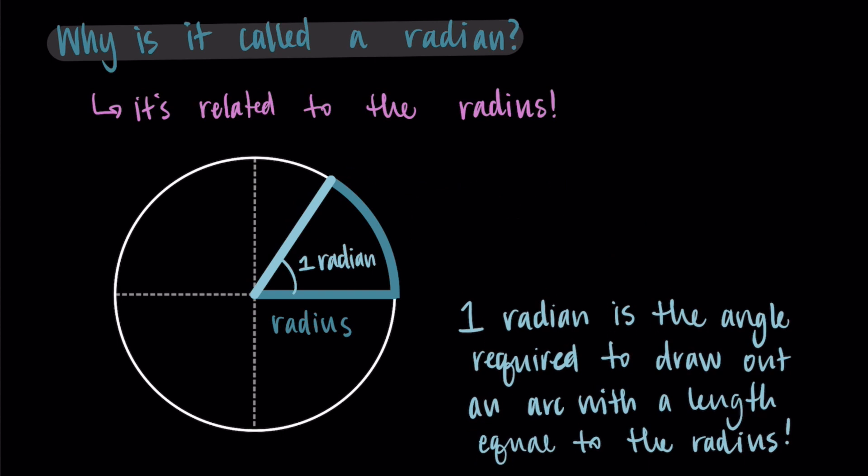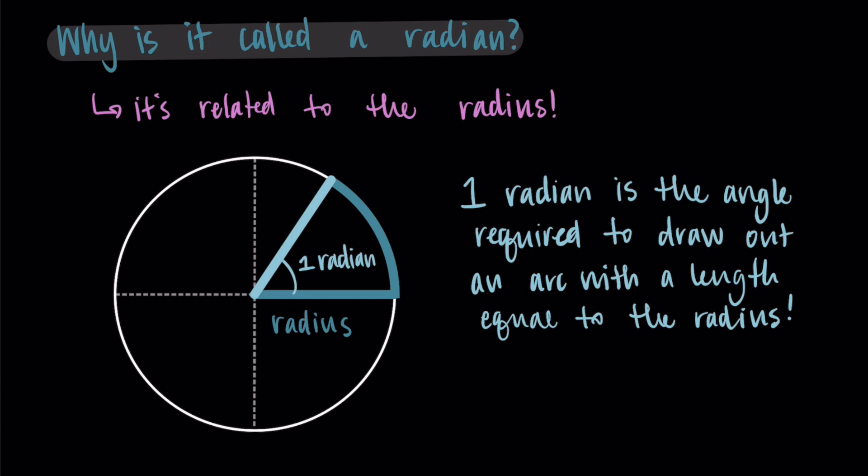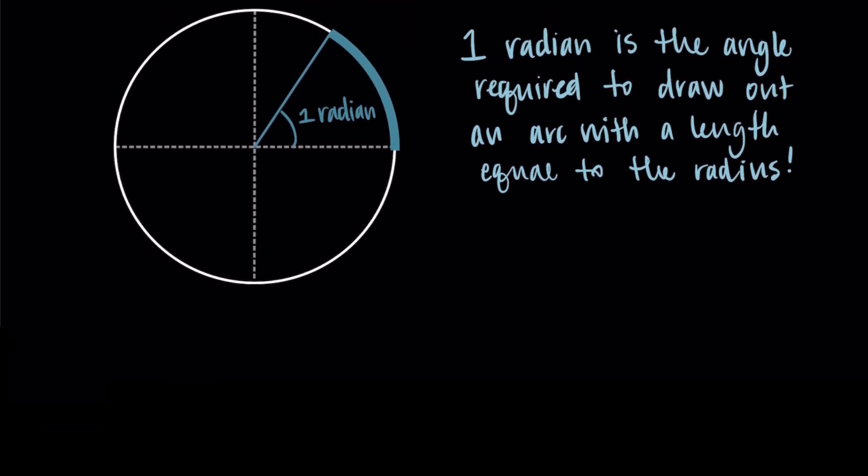All right, so this is what we have for one radian. But how does this relate to our notion that a full rotation is two pi radians? Well, let's just try to repeat this process throughout the whole revolution, the whole circle, and see what we get.